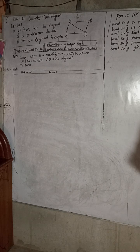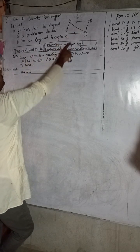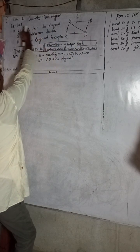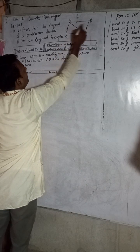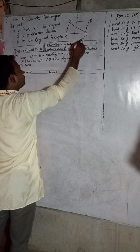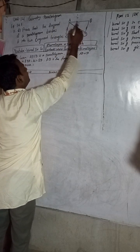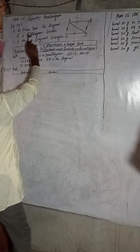Now let me start the solution. The question is 11D: Prove that the diagonal of a parallelogram divides it into two congruent triangles. Given: ABCD is a parallelogram. So AB is parallel to CD, and AB is equal to CD. Also, AD is parallel to BC, and AD is equal to BC.